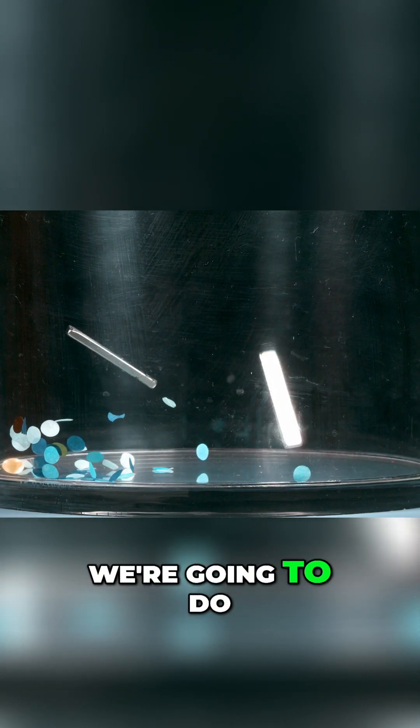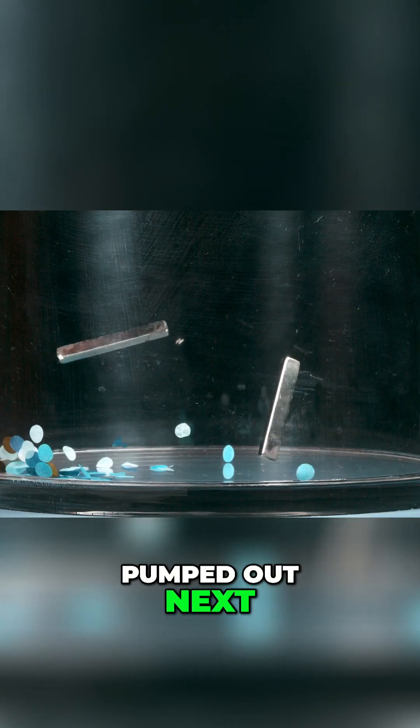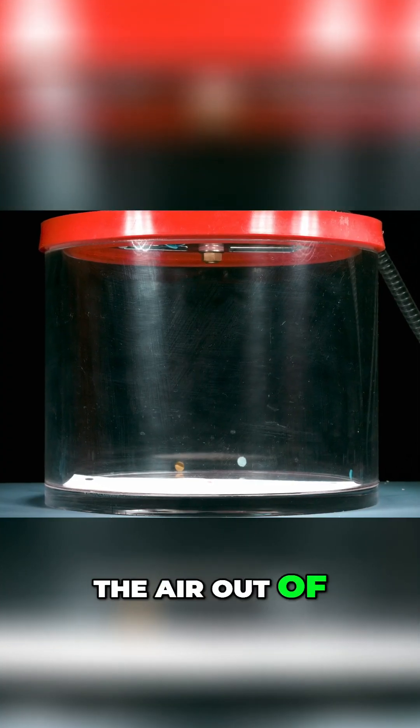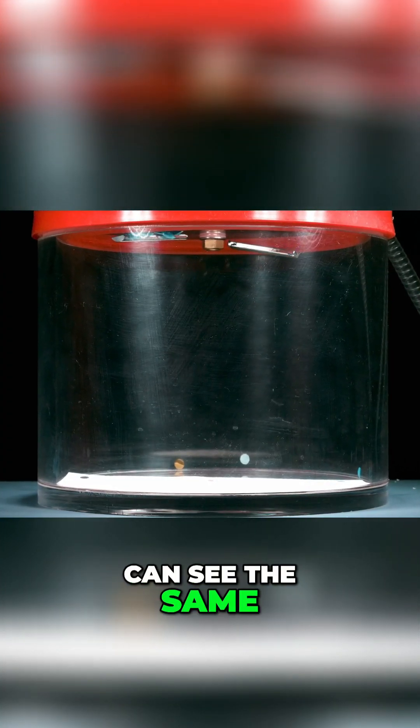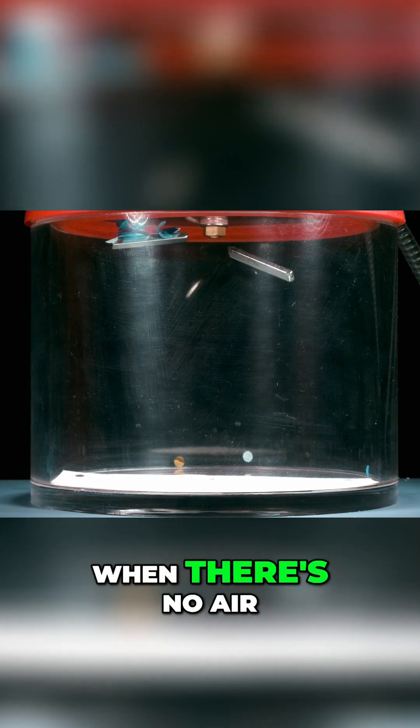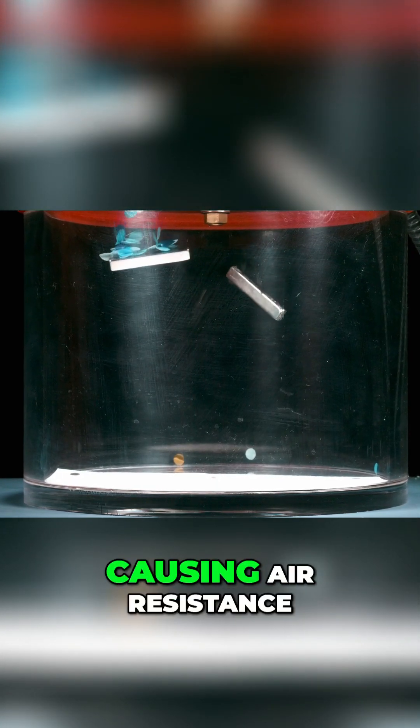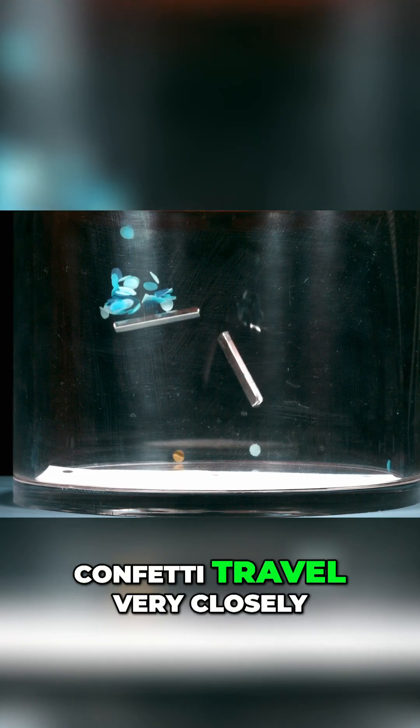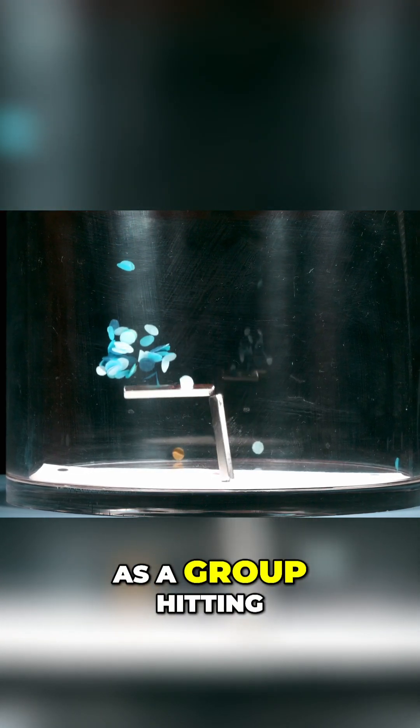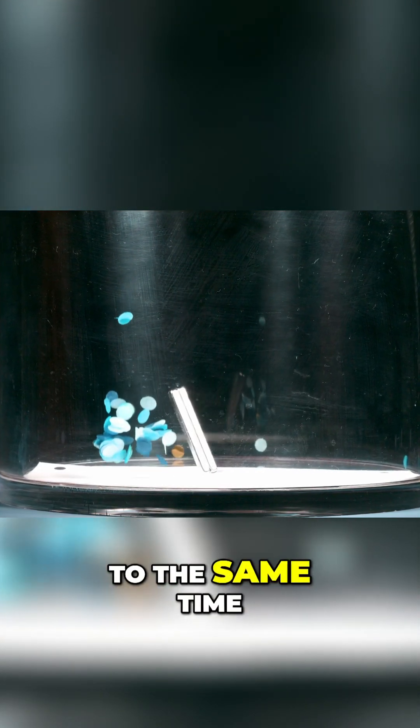Now, remember what this looks like. We're going to do it with the air pumped out next. So here, we've pumped the air out of the chamber, and you can see the same effect as with the feathers. When there's no air getting in the way, causing air resistance, the magnet and the confetti travel very closely as a group, hitting the ground very close to the same time.